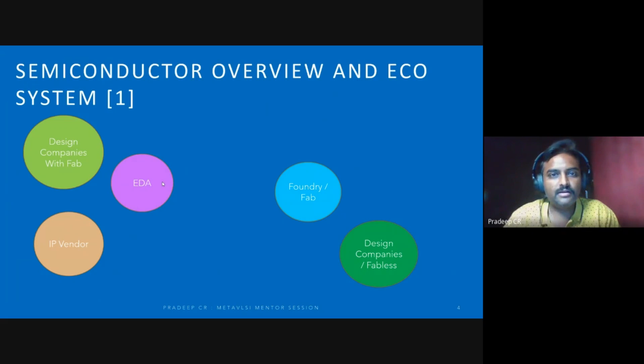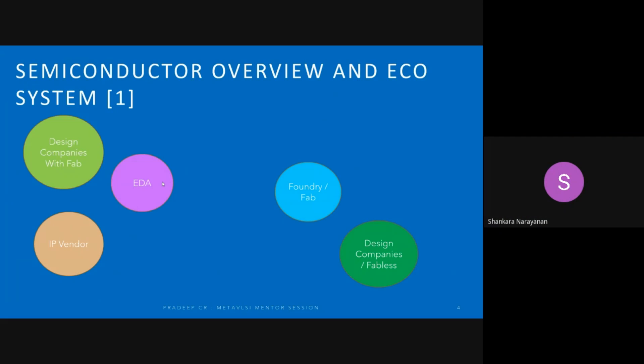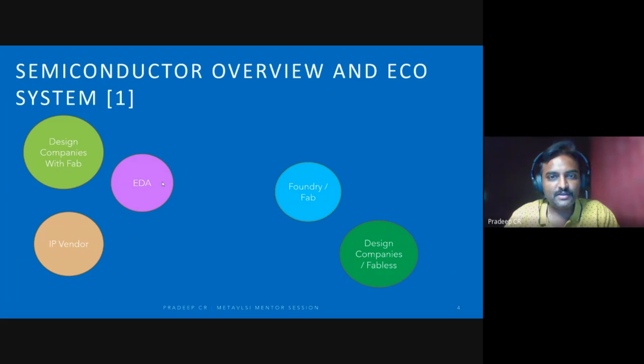Now there comes one of the important parts of the ecosystem - EDA actually. Which are the EDA companies you know? Synopsis, yes. Synopsis, Cadence, Siemens - the company I work with. All these companies are EDA - Ansys, Real Intent, and there used to be a company called Magma acquired by Synopsis. These are the main EDA companies.